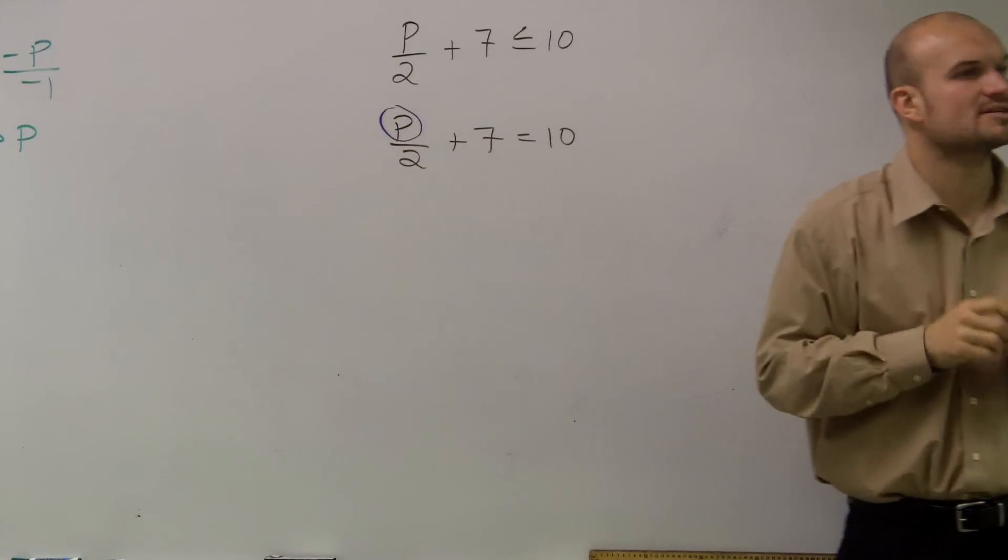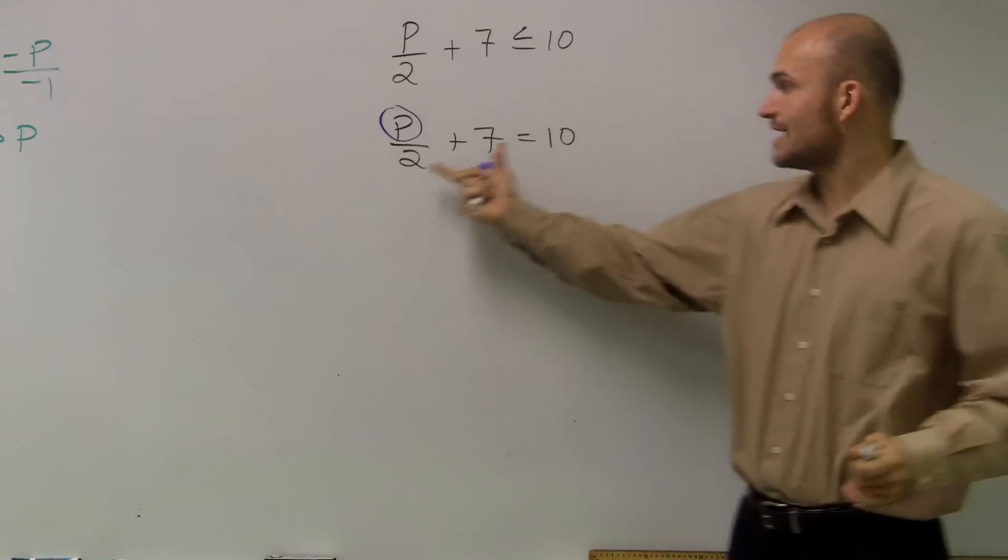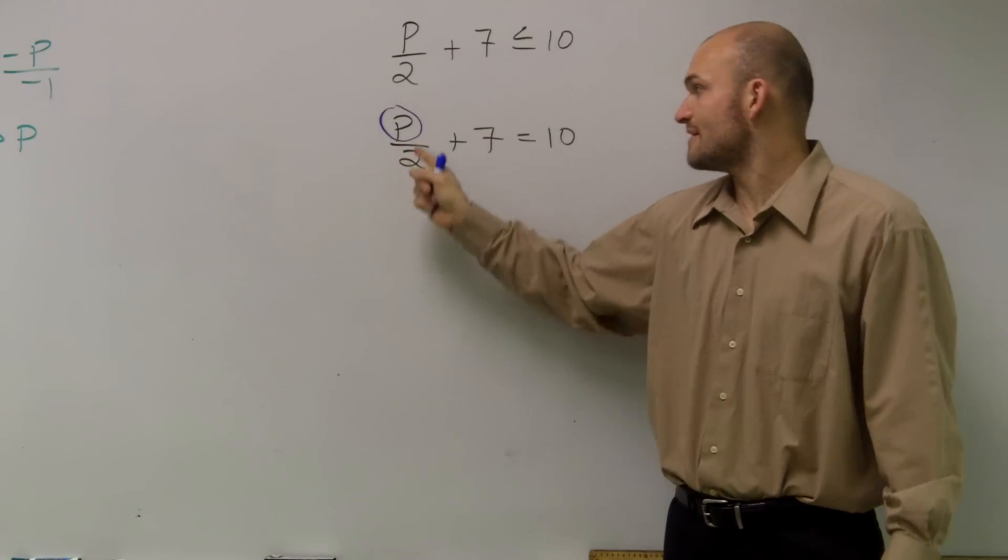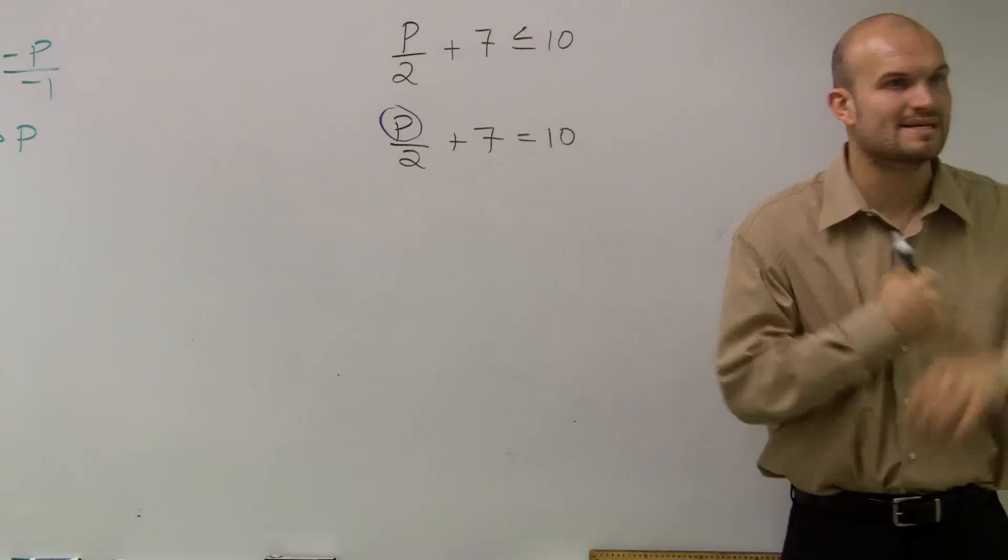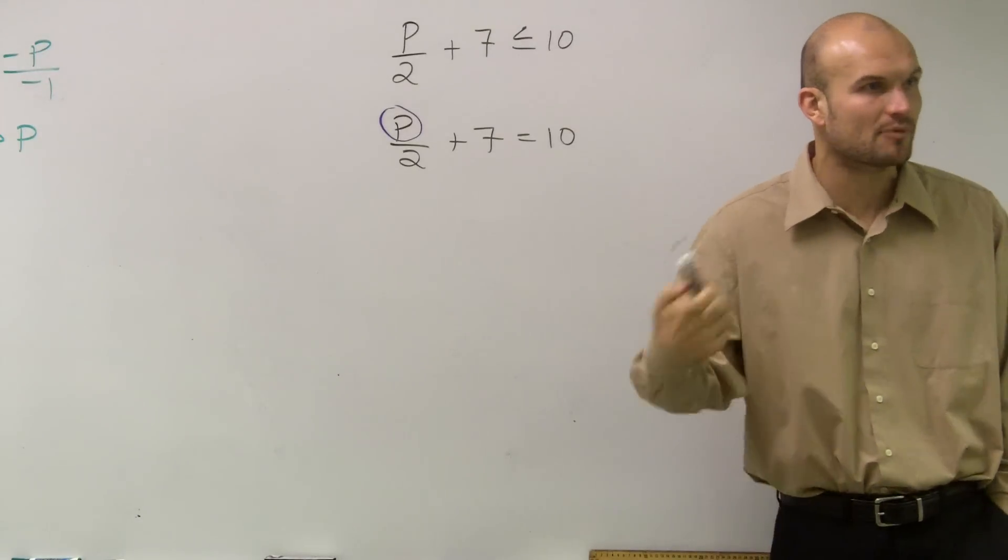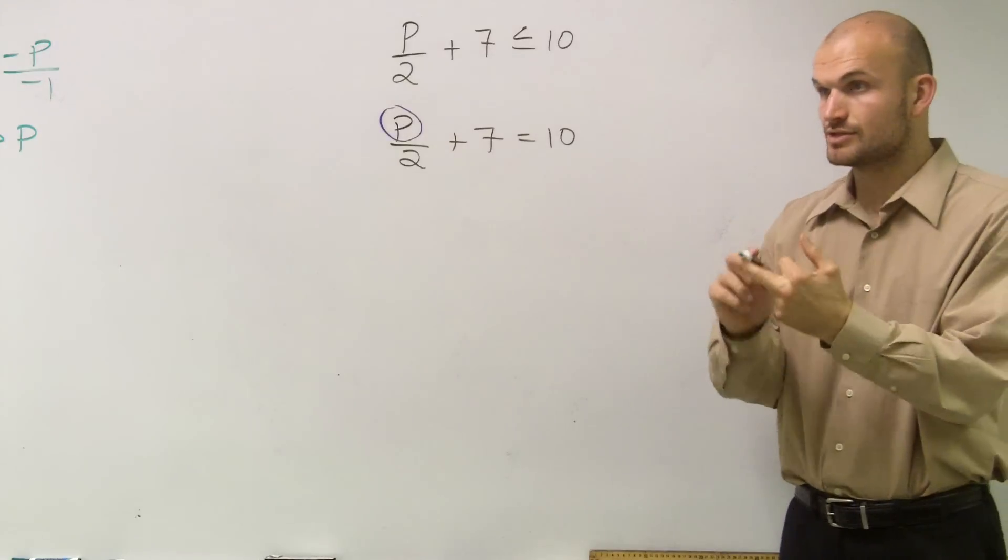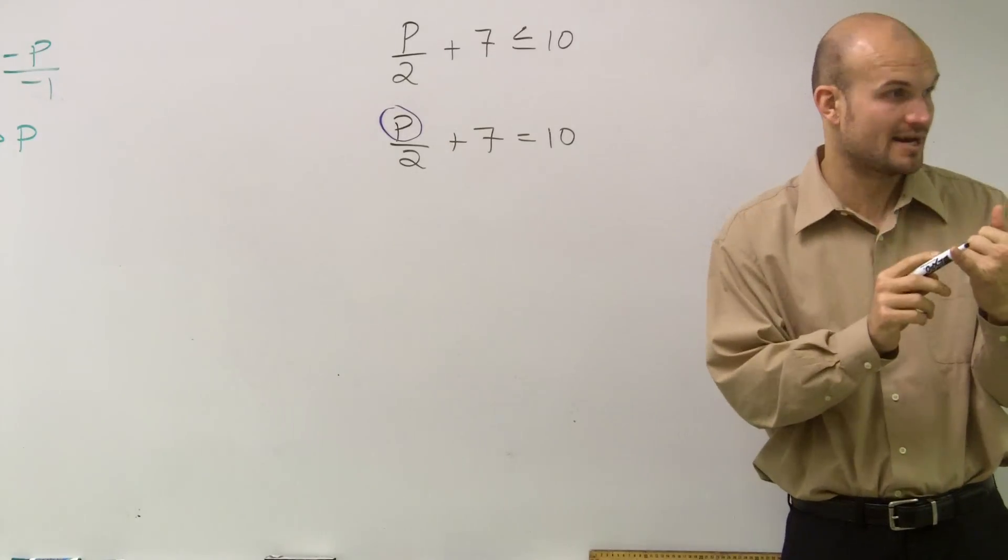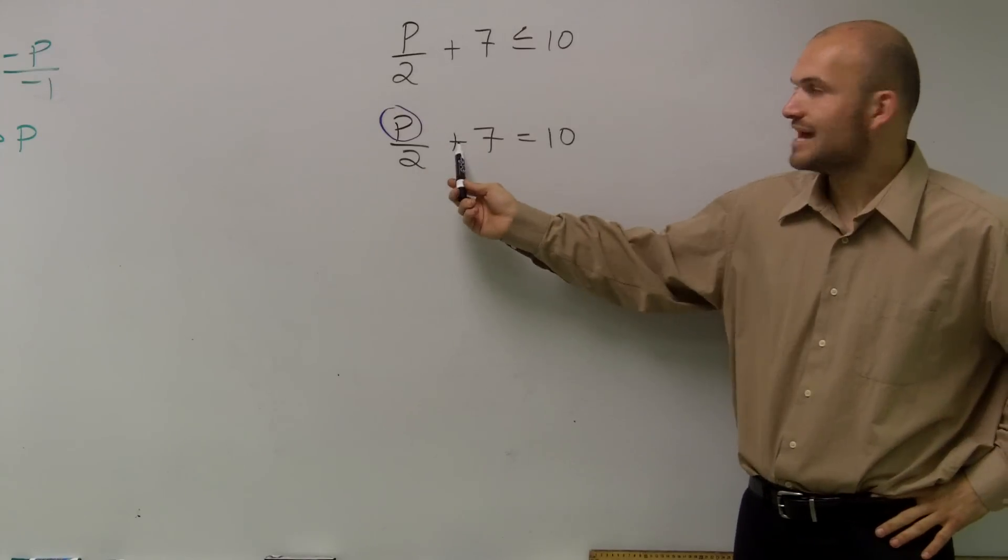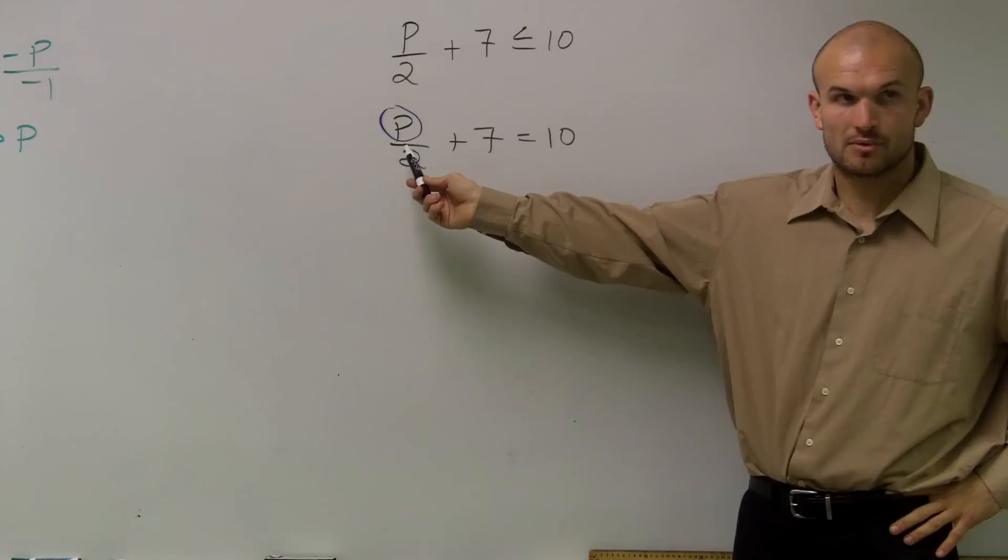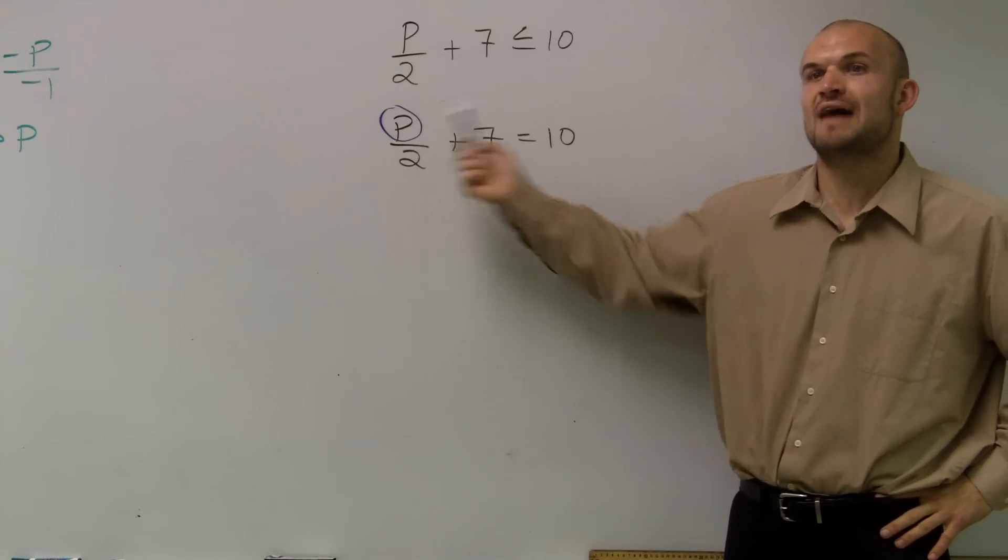Then I need to say, well, there's two numbers that are on the side of p, on this side of the equation sign. We have a 2 and a 7. Now, I need to know what is my 2 and my 7 doing to my variable—what operations? It's either adding, subtracting, multiplying, or dividing. So I look at this and I say, well, 7 is adding to my variable, and the 2 is dividing my variable.